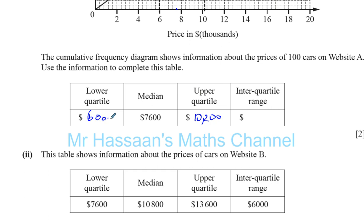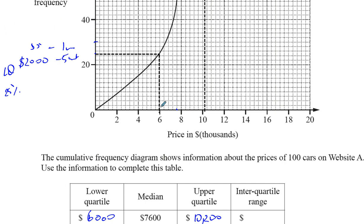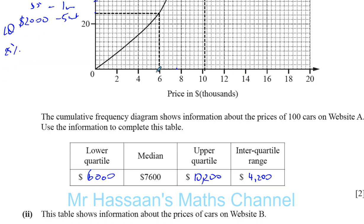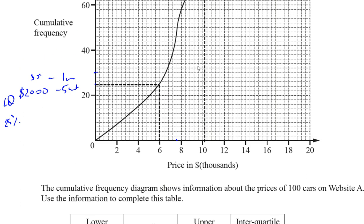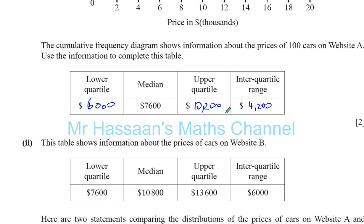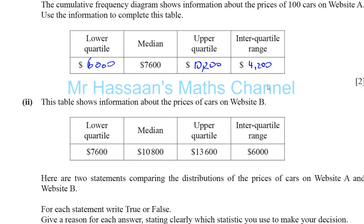So the lower quartile is six thousand and the upper quartile is ten thousand two hundred. The interquartile range is the difference between them: ten thousand two hundred minus six thousand equals four thousand two hundred. The interquartile range helps us look at the middle fifty percent of the data — cutting out the extremely low and extremely high values.